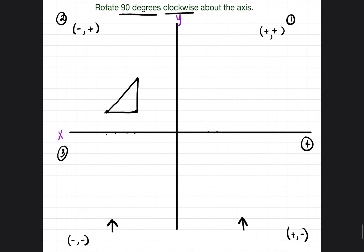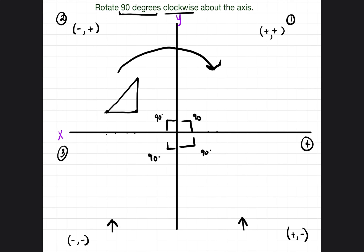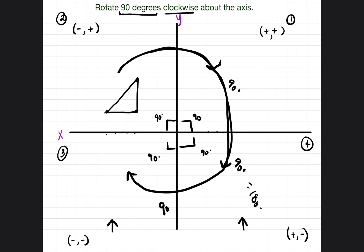Now let's talk about the amount of degrees. Because we're dealing with an axis and 90-degree angles, if they tell us to go 90 degrees in a direction, we literally go from one quadrant to the next — that's 90 degrees. If they told us 180 degrees, we'd go two quadrants: 90 plus 90 equals 180. And 270 degrees means moving through three quadrants: 90 plus 90 plus 90 equals 270 degrees.